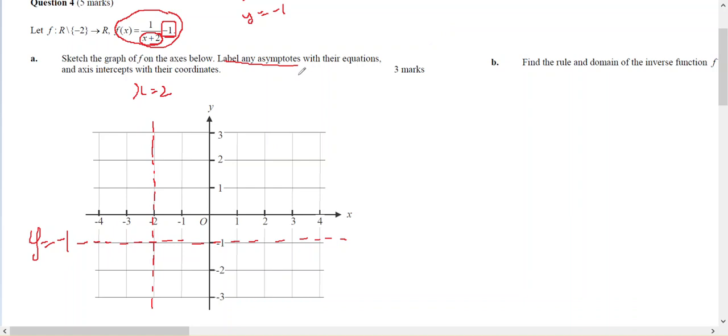To find the x-intercept and y-intercept, the y-intercept is when x equals 0. So f(0) equals 1 over 2 minus 1, which is negative 1/2. So it's going to be there at negative 1/2. They've said axial intercepts with their coordinates, plural. So I'm going to label that as (0, -1/2).